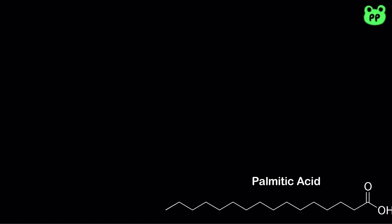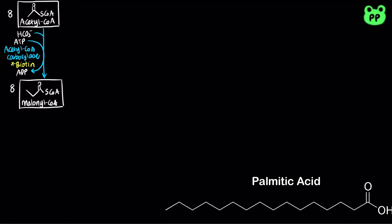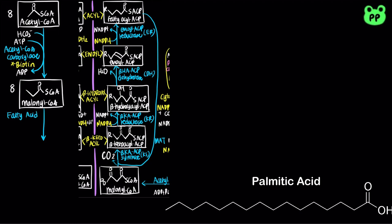To recap, synthesis of the 16-carbon saturated fatty acid, palmitate, requires 8 acetyl-CoA, which are converted to the 3-carbon malonyl-CoA by acetyl-CoA carboxylase, coupled to ATP hydrolysis. Malonyl-CoA can then undergo 7 rounds of 4 repeating steps of condensation and reduction, catalyzed by fatty acid synthase, releasing 8 carbon dioxide and producing palmitate.